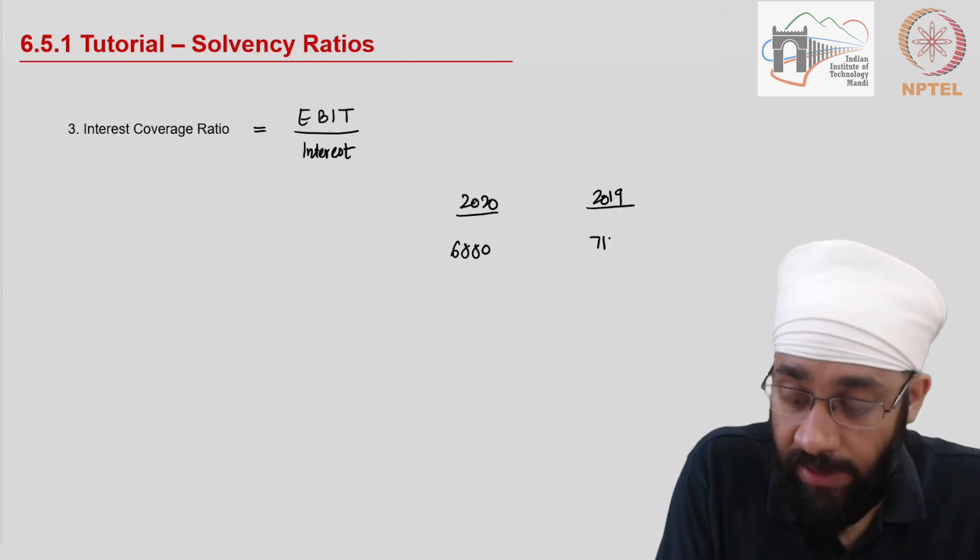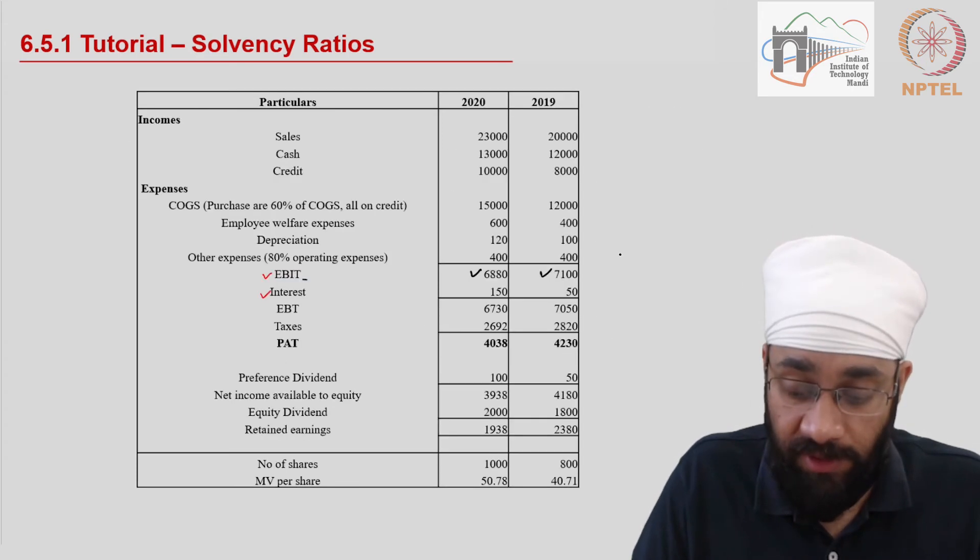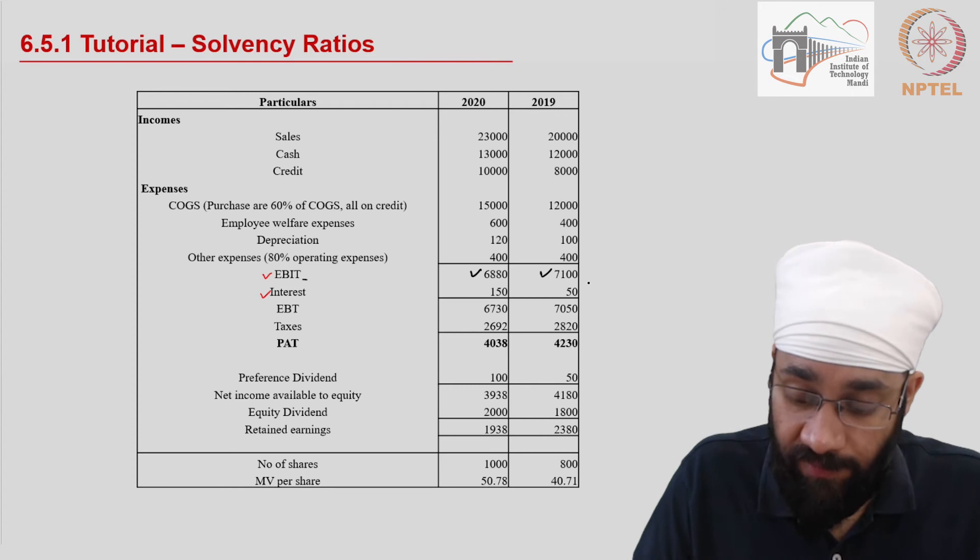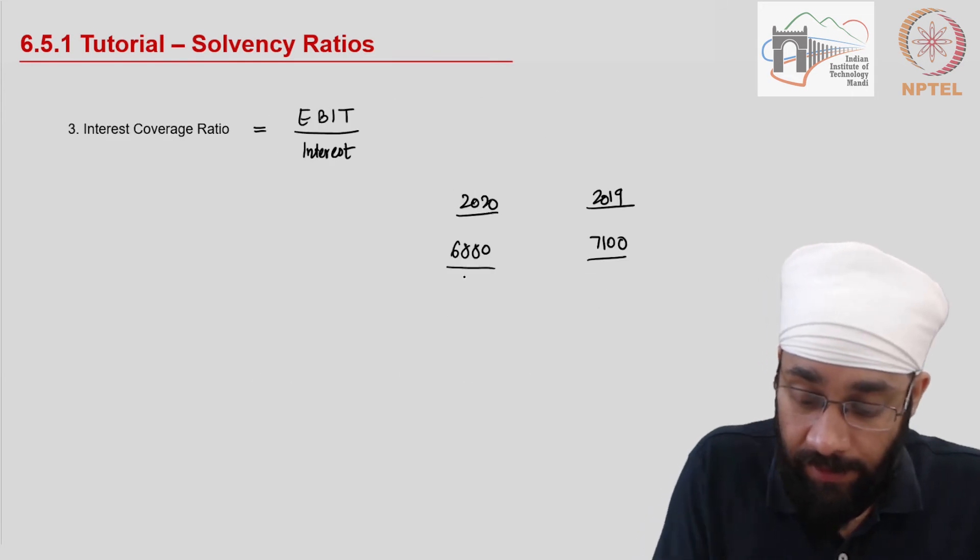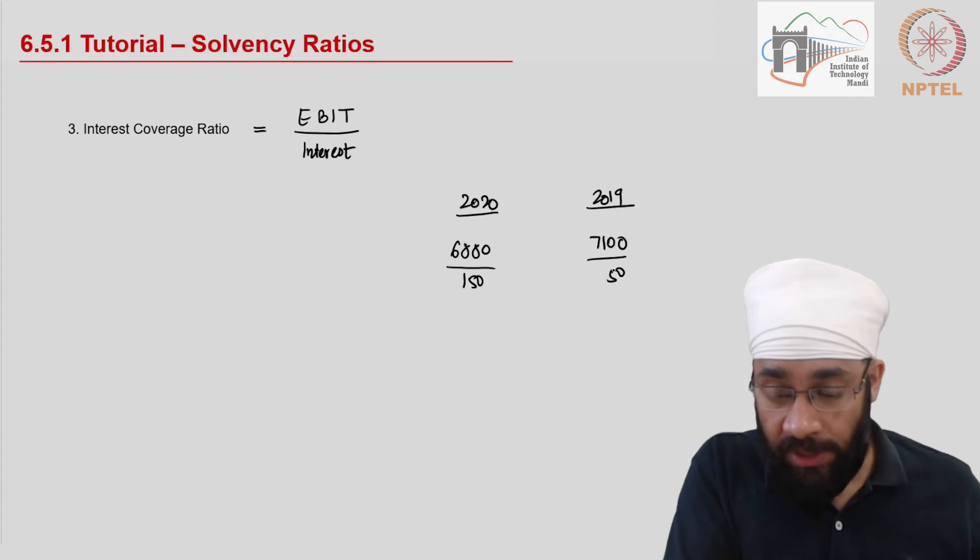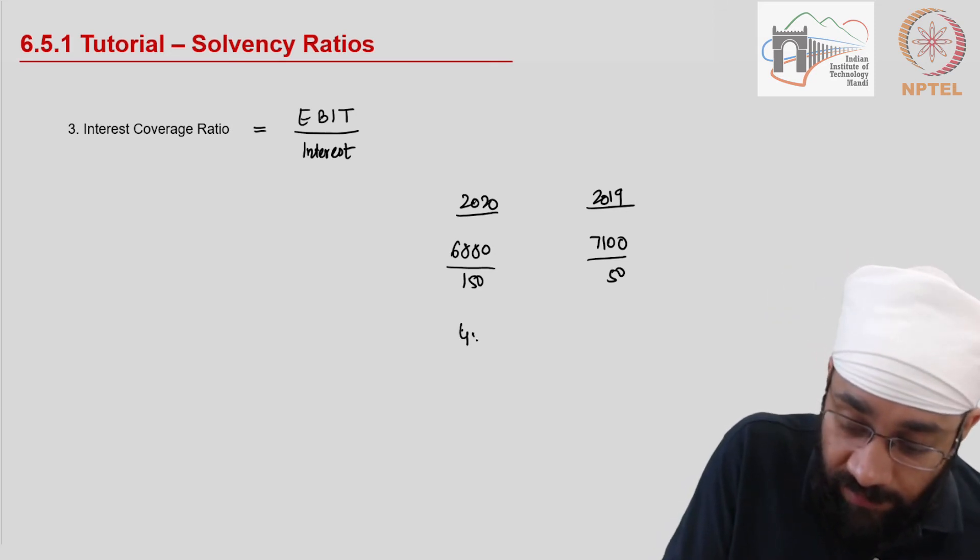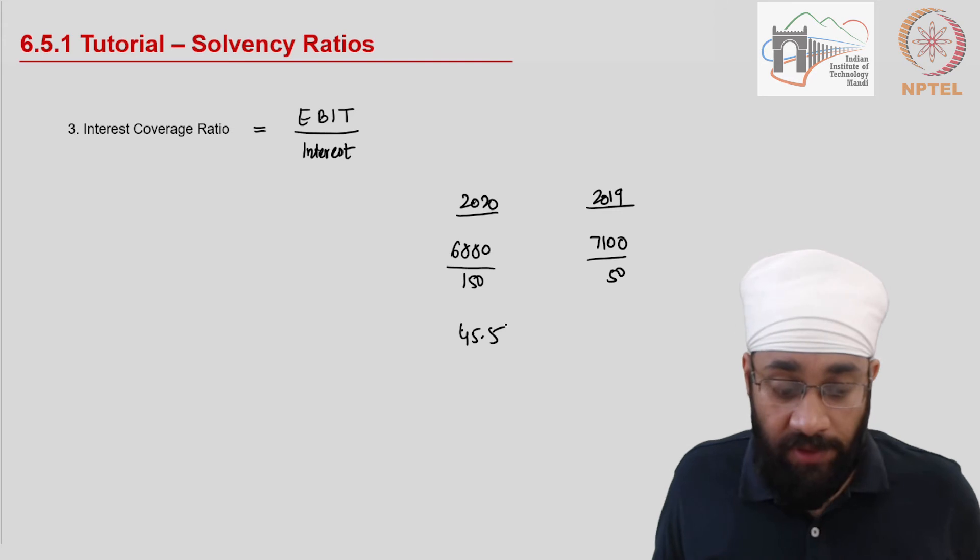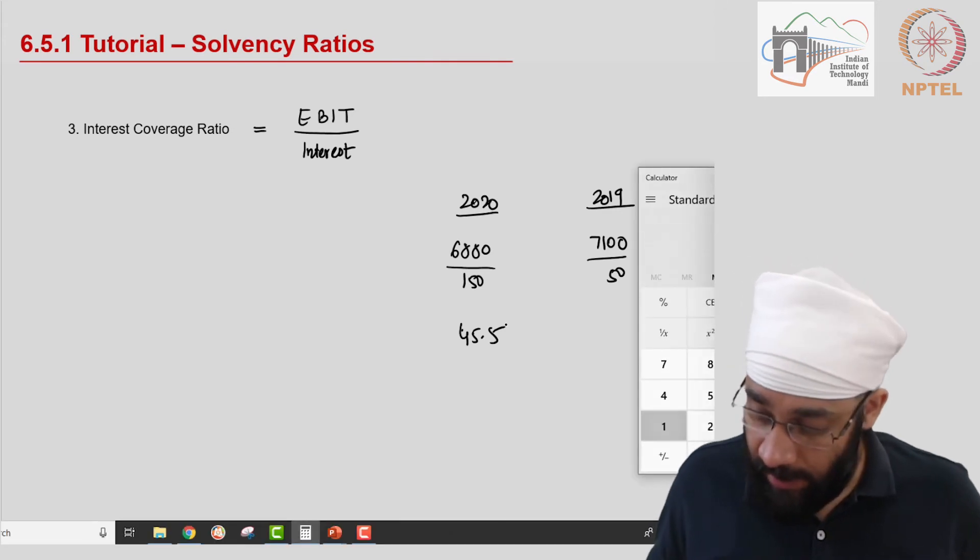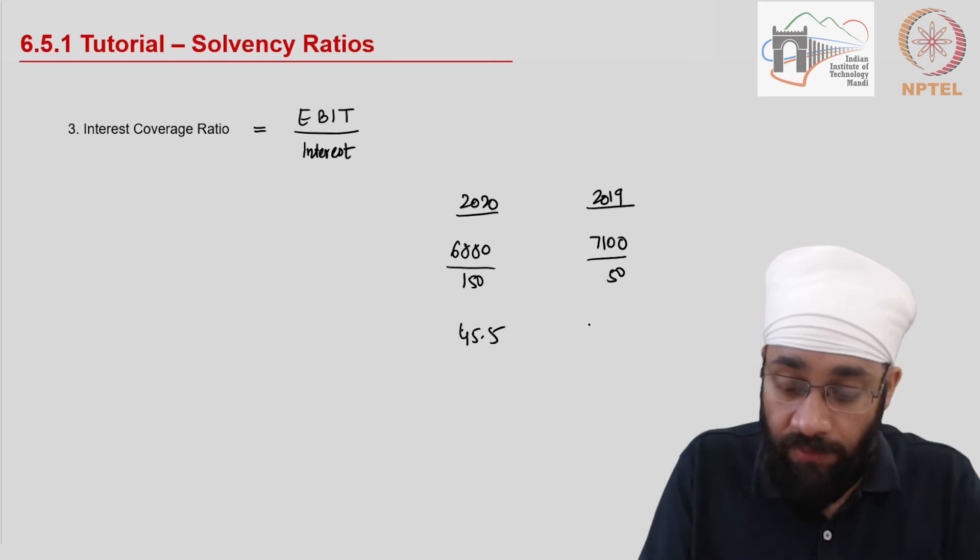EBIT has been given 6880 and 7100. We divide this by the amount of interest which is equal to 150 and 50. So 150 and 50 are the two numbers. So let's just do the calculations.